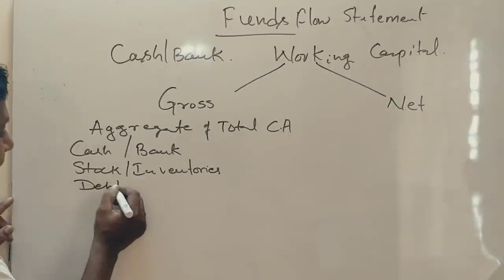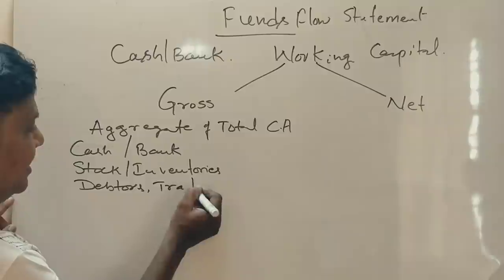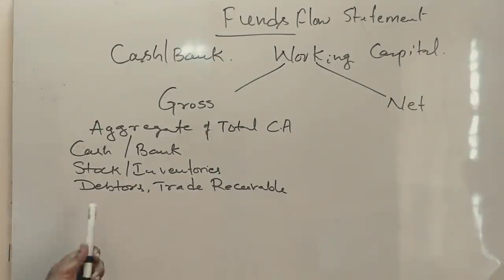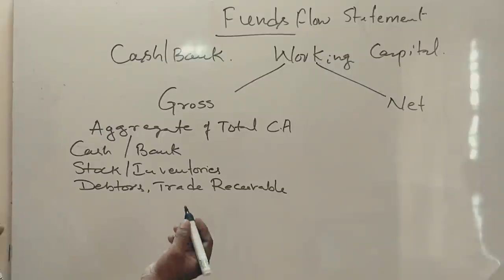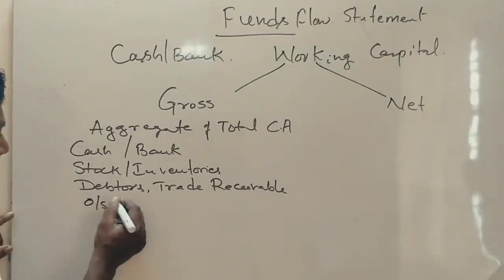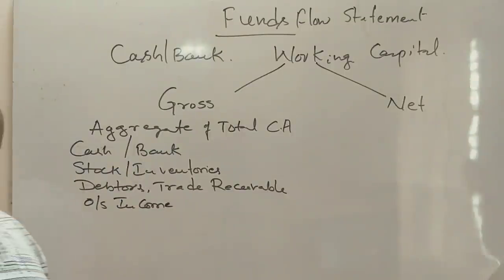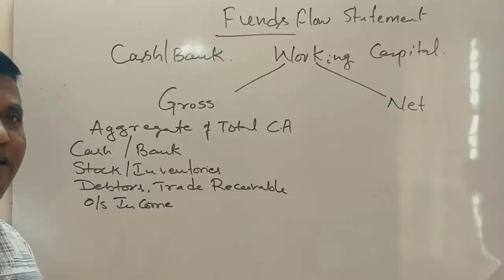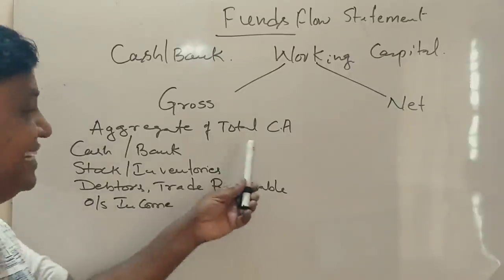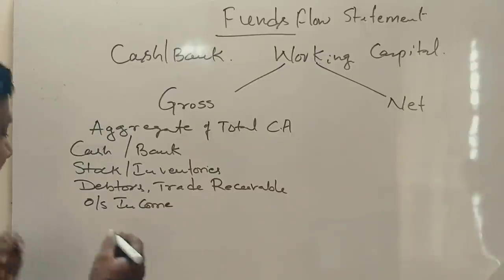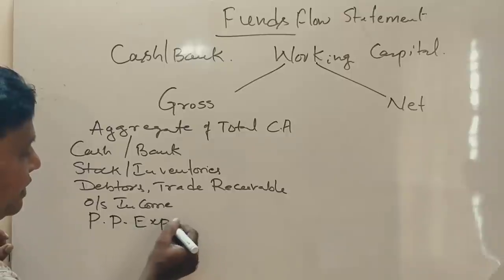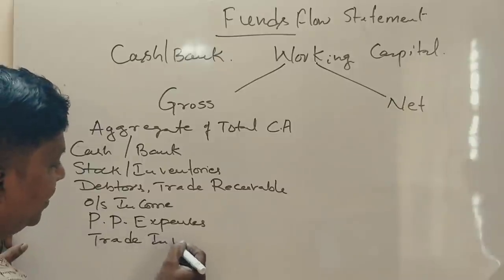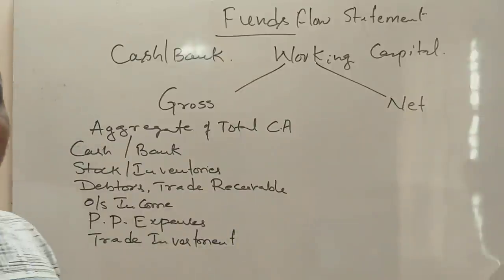Other current assets include debtors (trade receivables), income accrued, interest accrued on investments, prepaid expenses, trade investments, short-term investments, and marketable investments. Non-current investments are long-term investments of more than one year, whereas trade investments and marketable investments are short-term investments.